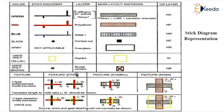If there is a buried contact, it is represented with a dot or a square box followed by an X mark. For an n-type enhancement mode transistor: polysilicon (red) crosses the n-diffusion (green). When polysilicon crosses the diffusion, it is considered an n-type enhancement mode transistor.